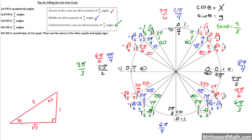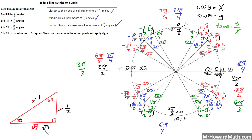Here is our 30-60-90 special triangle with the 30-degree angle in the lower left corner, mapped to this angle on the unit circle. The way we learned it, the 30-degree side was 1, the 90-degree side (hypotenuse) was 2, and the 60-degree side was square root of 3. When using the unit circle, the radius must equal 1, so we divide all sides by 2. Half of 2 is 1, half of 1 is 1/2, and half of square root of 3 is square root of 3 over 2. So the x-coordinate is square root of 3 over 2 and the y-coordinate is 1/2, with a radius of 1.